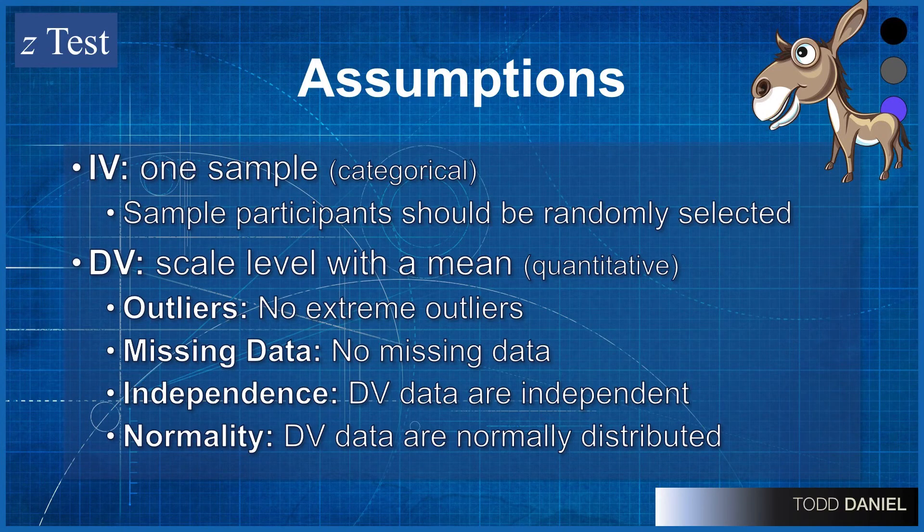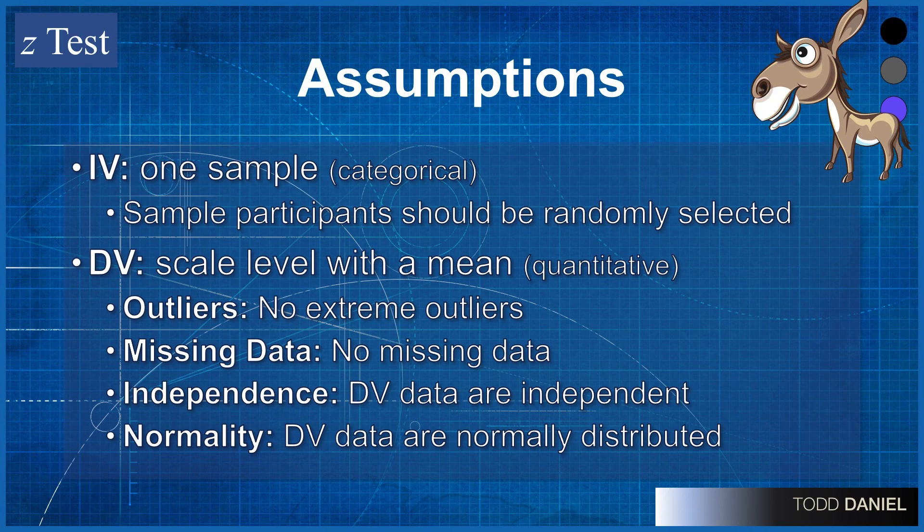Here are some settings, some assumptions that we need to know about as we are using our one-sample z-test. Now the first is the independent and dependent variables. As you might determine from a one-sample z-test, we have one sample. The sample participants should be randomly selected. We'll use a dependent variable, which is something that we measure. It could be height, or weight, or diameter of ball bearings, or some other measure that we can calculate a mean. Add up all the scores, divide by n, that gives us our average, our mean. We have one variable, it has one group, and something has been measured that we can add up to get a mean.